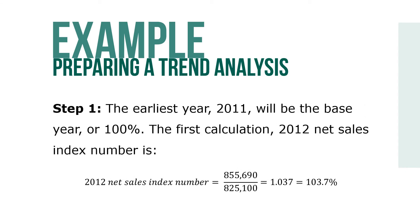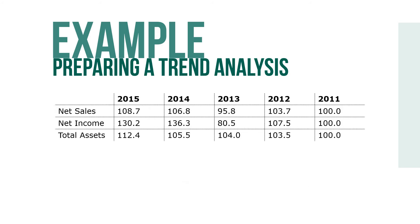Step one: the earliest year, 2011, would be the base year or 100%. The first calculation — the 2012 net sales index number — equals $855,690 over $825,100, which equals 1.037 or 103.7%. Here is the five-year trend analysis of net sales, net income, and total assets in percentage using those steps.